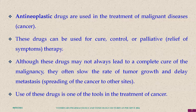Metastasis is one of the important processes in cancer pathology. Cancer cells get out of the primary tumor, enter the bloodstream, and lodge in other tissues like the lungs, spleen, and lymph nodes. We can restrict the growth of the tumor to the tissue where it originated, or else it is very difficult to treat.